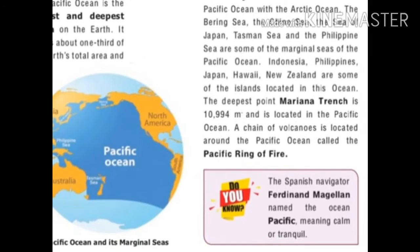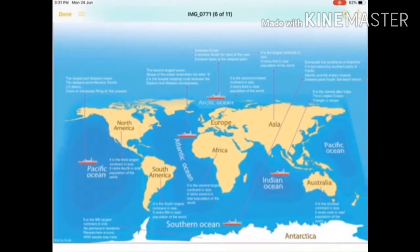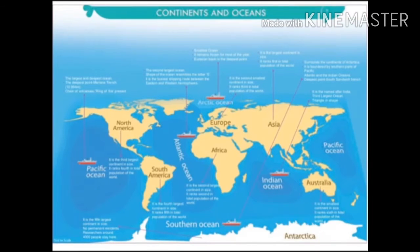The Spanish navigator Ferdinand Magellan named the ocean 'Pacific' meaning calm and tranquil. You can see a map or a glance of continents and oceans.